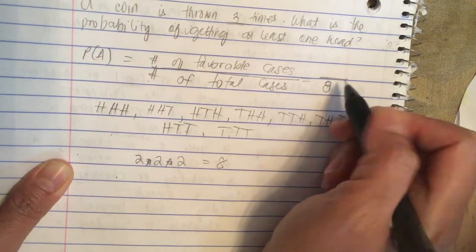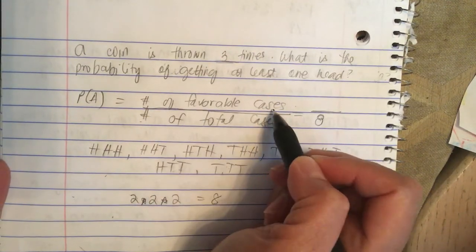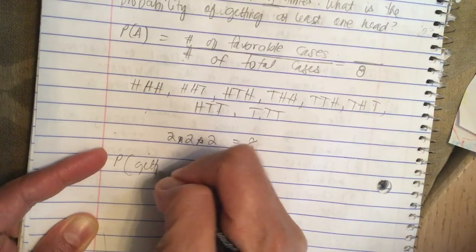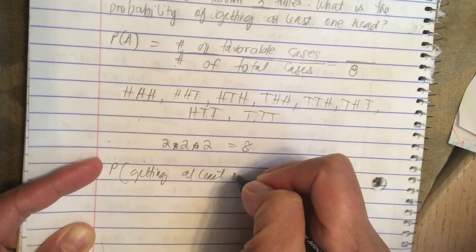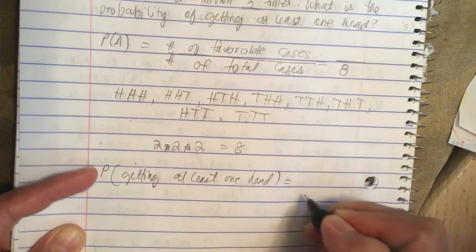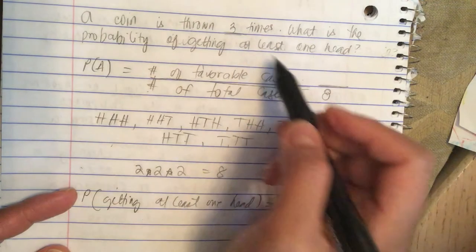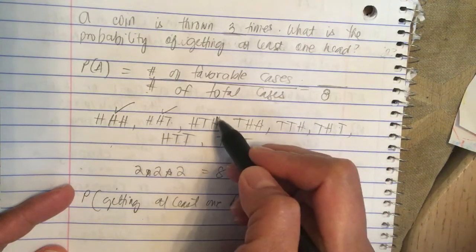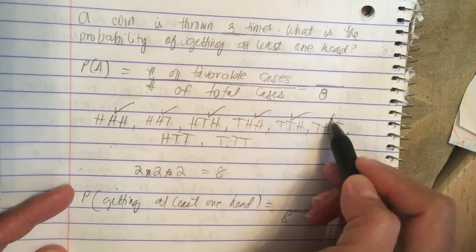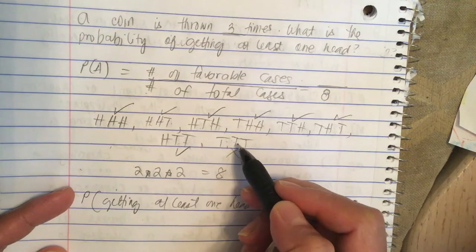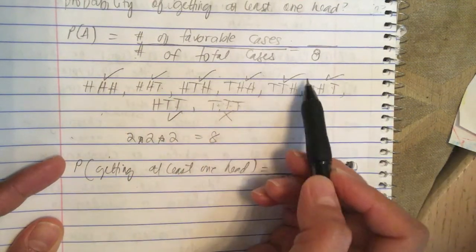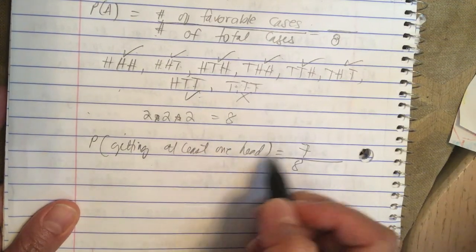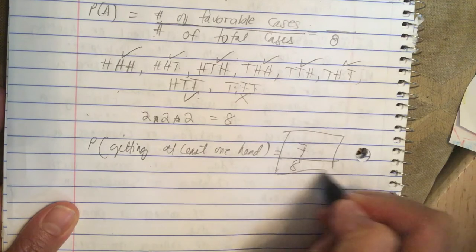The denominator is eight. Now the number of favorable cases: the probability of getting at least one head. Checking each outcome — head-head-head: yes, head-head-tail: yes, head-tail-head: yes, tail-head-head: yes, tail-tail-head: yes, tail-head-tail: yes, head-tail-tail: yes, tail-tail-tail: no. So there are seven favorable cases. The probability of getting at least one head is seven over eight.